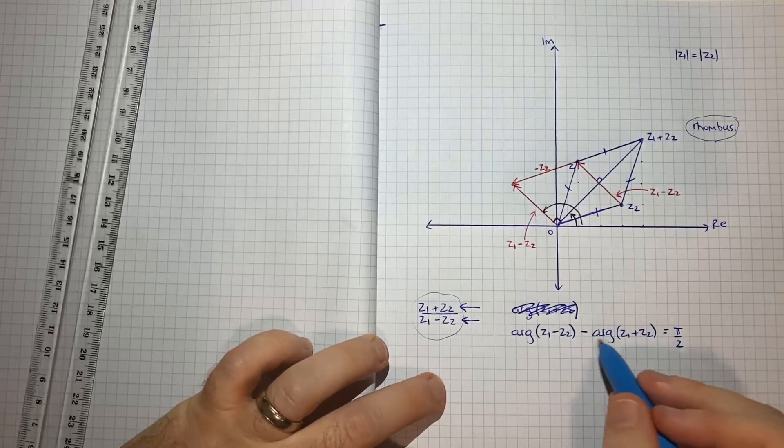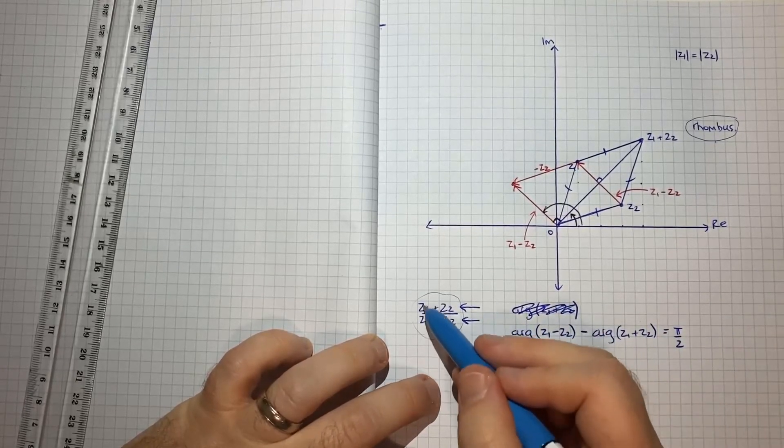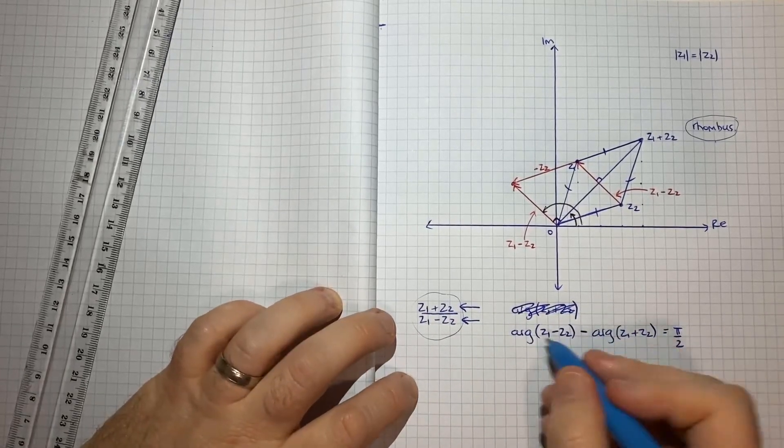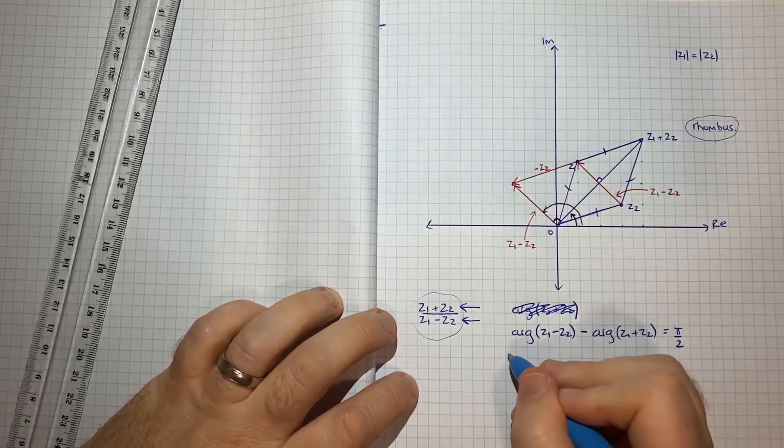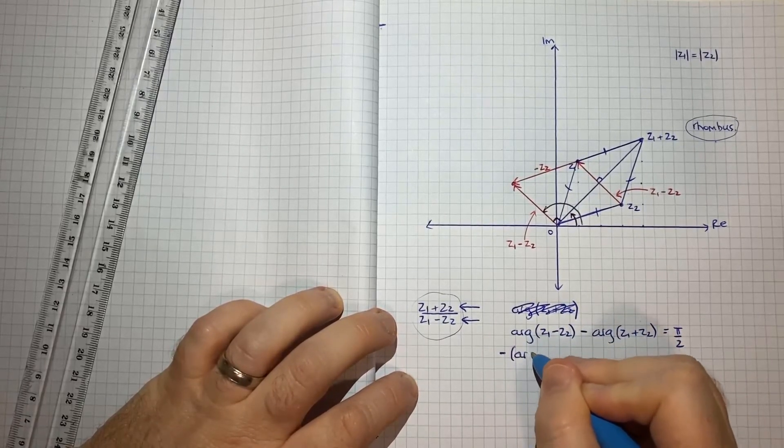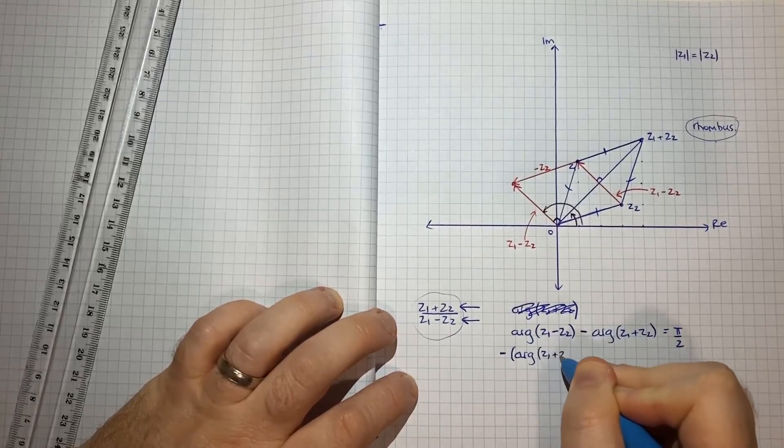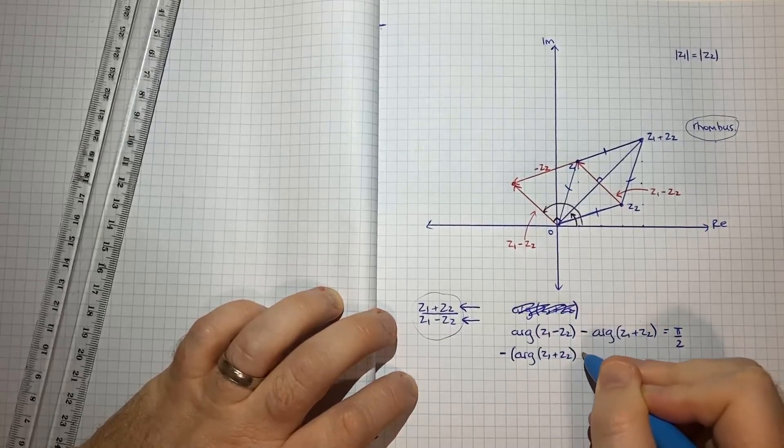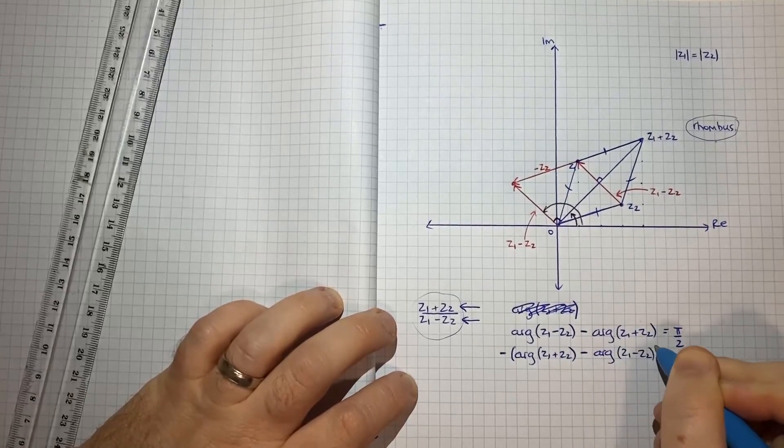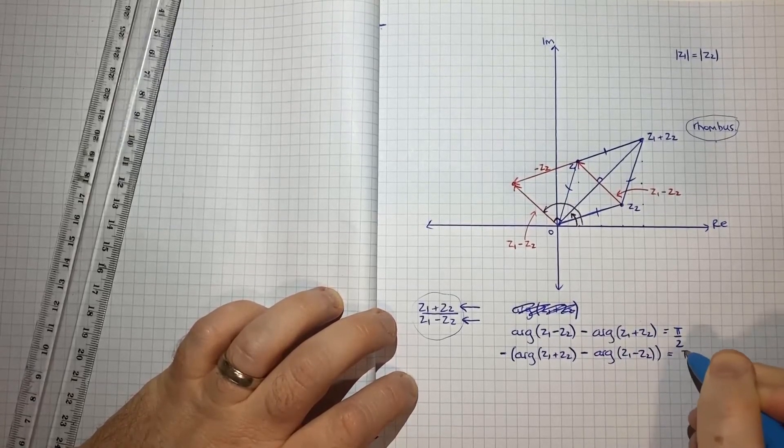Now what I'll do, just to help get things in what will ultimately be this order, is I'll do a negative on each side. So I'll do minus the argument of z1 plus z2 minus the argument of z1 minus z2, is equal to π over 2.